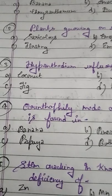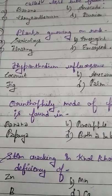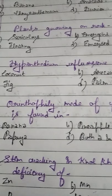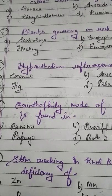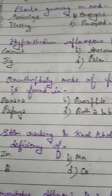Student, question number 3. Hypanthodium type of inflorescence is found in which of the following? Option A: Coconut, Option B: Racemose, Option C: Fig, Option D: Palm. The correct answer is Fig. Hypanthodium type of inflorescence is found in Fig.